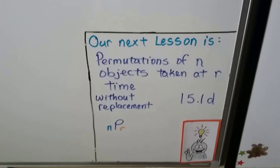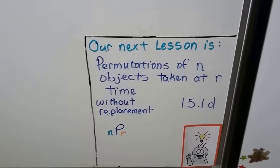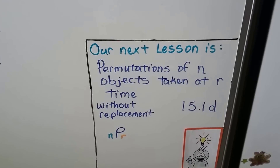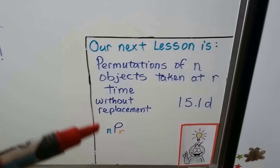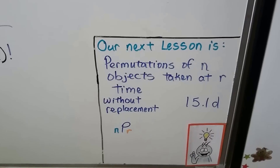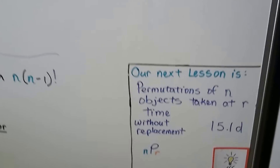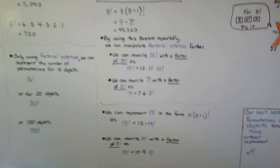Our very next lesson is permutations of n objects taken at r at a time, and this is without replacement. You'll see in your text it'll say nPr. That's lesson 15.1d. And as I said, if you're very confused, you probably should have watched the first two videos — they're linked in the description, and there might even be information cards linked to this video. Stick with me and we'll check out permutations of n objects in the next video. I hope you have a great day, and I'll see you next time. Bye!